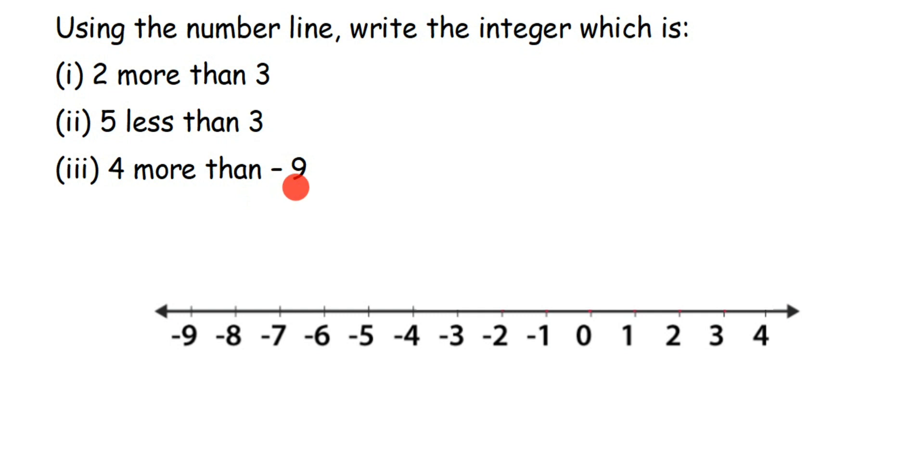I'm going to start with the first question. So here, 2 more than 3 means 3, and we have to add 2 more, so 3 plus 2. So 3 plus 2 means we want to start with 3. So we have 3 here and we have to add 2 more to it.